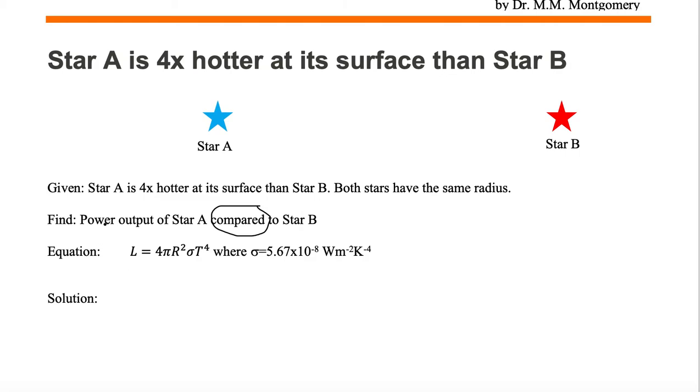Since we're looking for power output, power is luminosity. So we're looking for the luminosity of A relative to the luminosity of B. That's our goal.